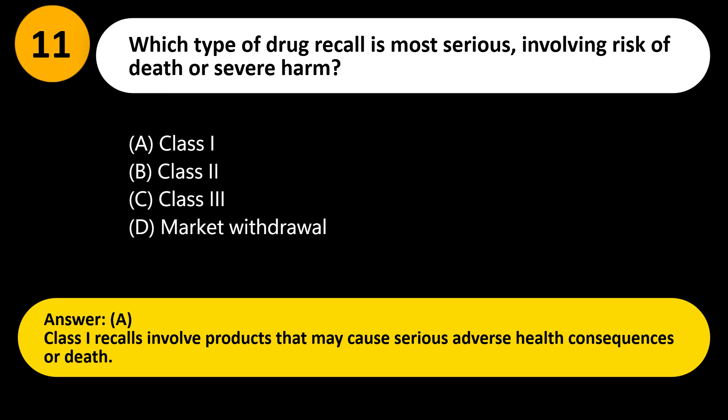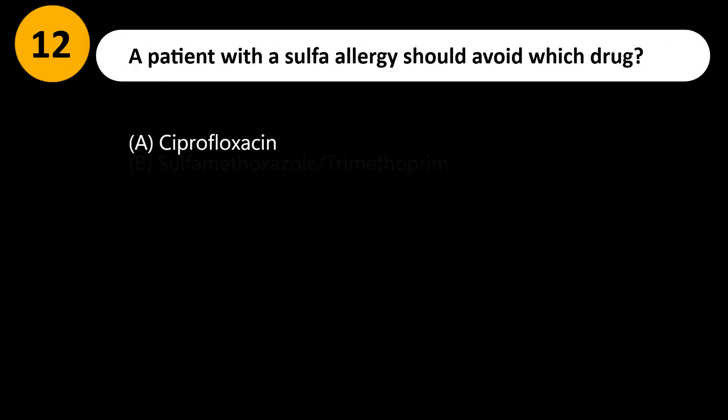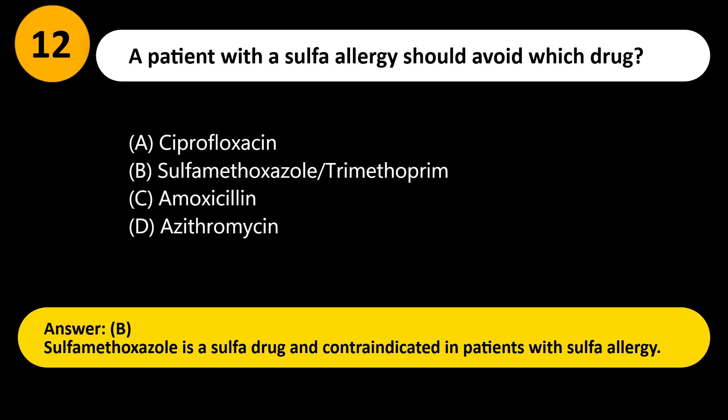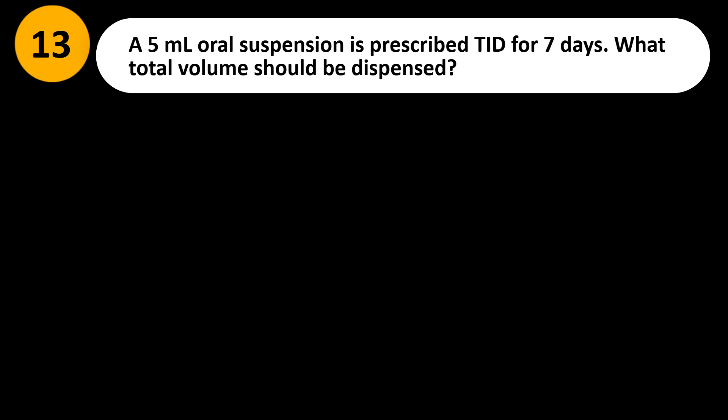A patient with a sulfa allergy should avoid which drug? A) Ciprofloxacin, B) Sulfamethoxazole/trimethoprim, C) Amoxicillin, D) Azithromycin. Answer: B. Sulfamethoxazole is a sulfa drug and is contraindicated in patients with a sulfa allergy.